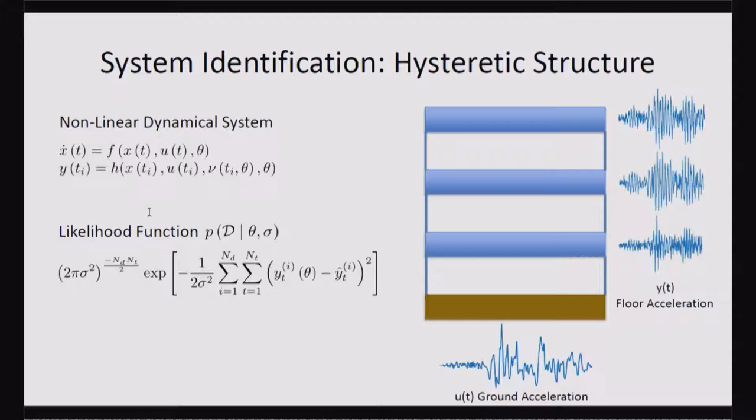Which you're getting from accelerometers. And this model is fairly simple, but it's a dynamical system, so actually calculating a likelihood for this is itself challenging, and then taking derivatives of that likelihood is very challenging. With tools like automatic differentiation, we can now do these types of problems very nicely.